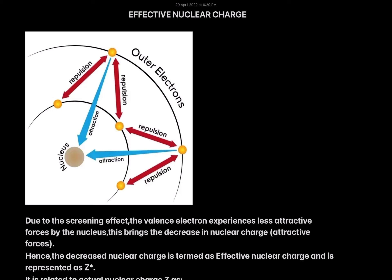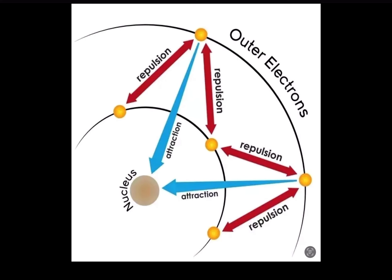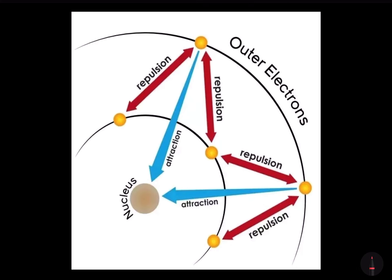To understand effective nuclear charge, let's recapitulate the previous lecture on the screening effect or shielding effect. Here you can see a picture to help understand the screening effect — this is the nucleus, this is the outermost electron, or the valence electron. After that, this is the inner electron.